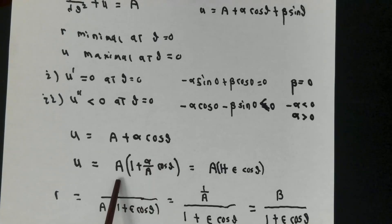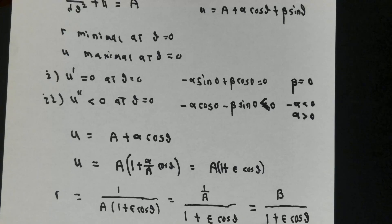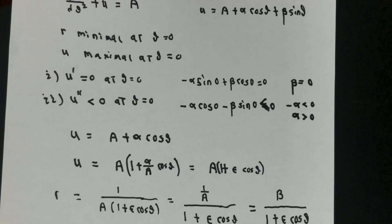If I factor the a out and call alpha divided by a, which is positive, by the letter epsilon, the eccentricity of the orbit, I can write r, which is 1 over u, as 1 over a times 1 plus epsilon cosine theta, or if it's convenient, as a constant divided by 1 plus epsilon cosine theta. This is the usual form that people write these kinds of equations in.